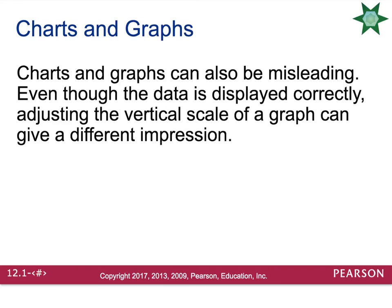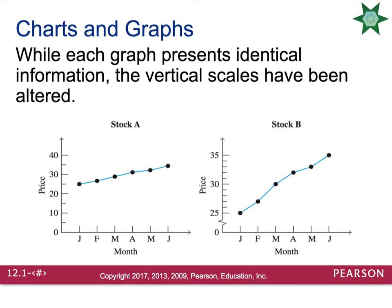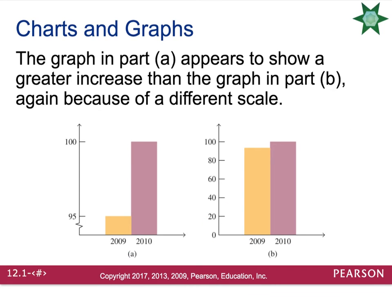Charts and graphs can also be misleading. Even though the data is displayed correctly, adjusting the vertical scale or y-axis of a graph can give a different impression. On the second graph, notice the break — they're starting the graph at 25 instead of 0, which makes the slope of the stock look a lot steeper, making you think the stock is making a lot more money than it actually is. They can also do this on bar graphs: graph 1 shows a vertical change of only 5 units, whereas graph 2 shows a change of 100 units, making graph 1 look like there was a giant change in results.